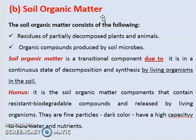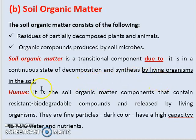Organic matter means the residues of partially decomposed plant and animal material, and organic compounds produced by soil microbes. Soil organic matter is a transitional compound because it is in a continuous state of decomposition and synthesis by living organisms in the soil. When organic matter falls to the soil, microorganisms start decomposition to convert the plant or animal residues into organic matter.